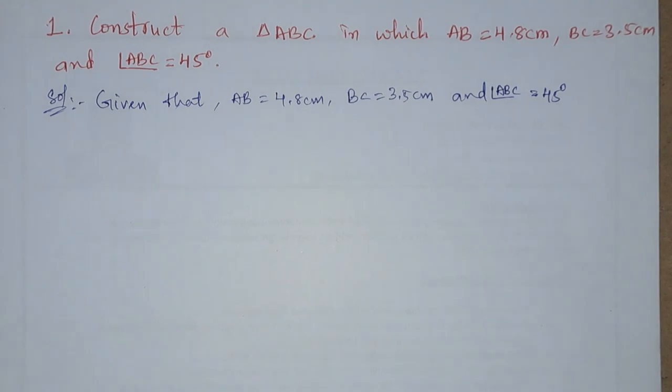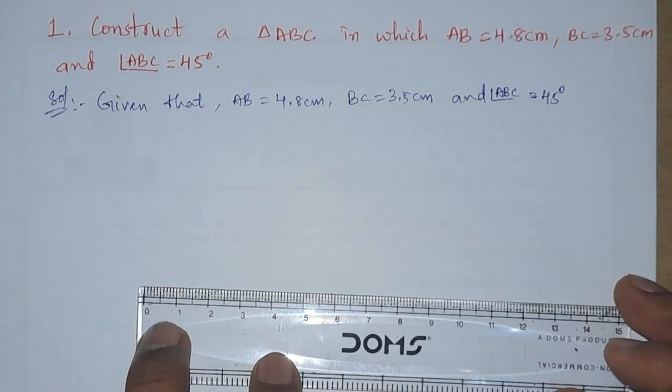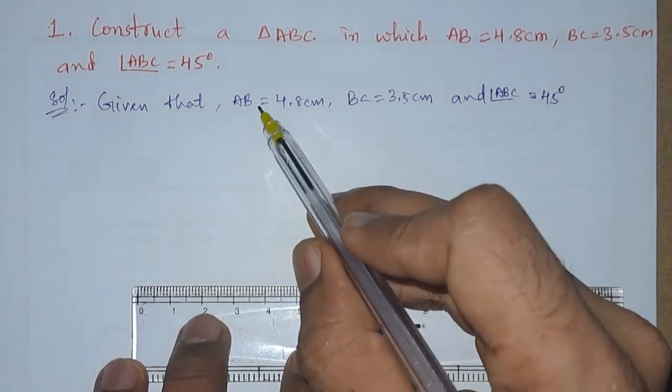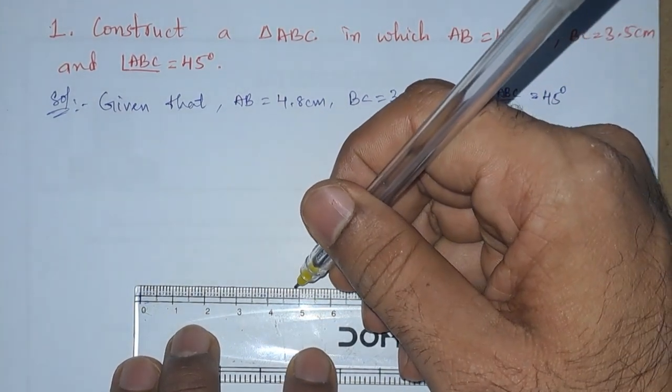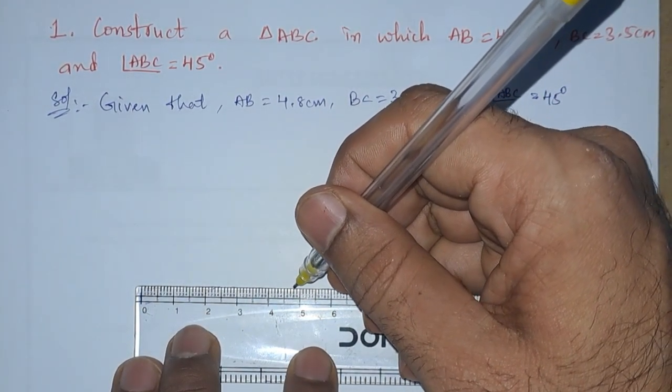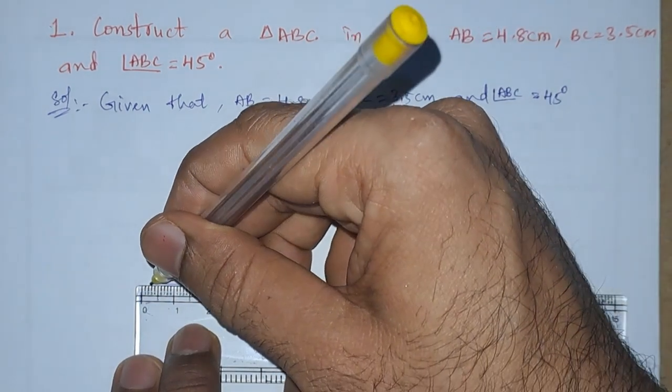Now we are having these measurements. First we will draw a line. Here I am going to draw the line AB which is 4.8 centimeters. So AB equals 4.8 centimeter.